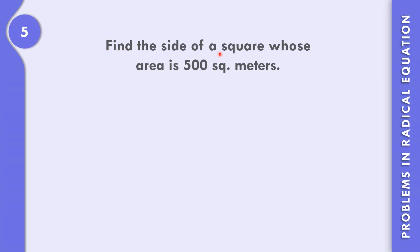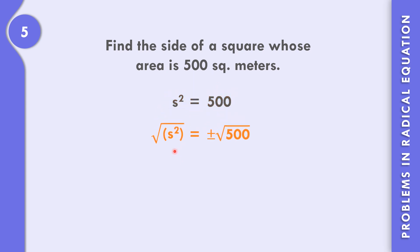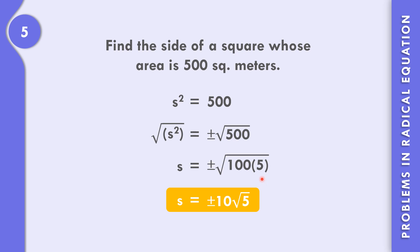In example number 5, find the side of a square whose area is 500 square meters. The formula for the area of a square is A equals S squared, or S squared equals A. So S squared equals 500. To solve for the side of the square, let us take the square root of both sides: square root of S squared equals plus or minus square root of 500. Cancel the 2 and the radical sign, so that becomes S. Think of a factor of 500 with a perfect square — that is 100 times 5. The square root of 100 is plus or minus 10, so S equals plus or minus 10 times square root of 5.